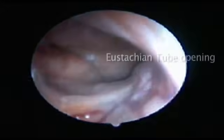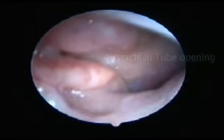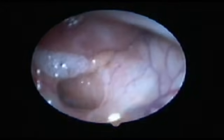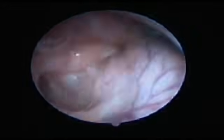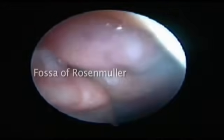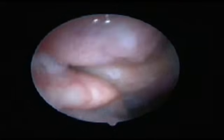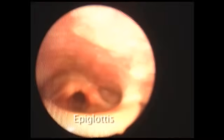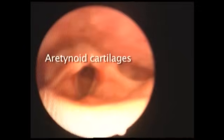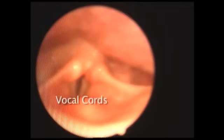The scope is then passed into the posterior part of the nose, where you can see the eustachian tube opening, and the fossa of Rosenmüller. Passing the scope even further back, you can see the epiglottis, the arytenoid cartilages, and the vocal cords.